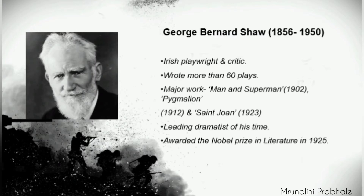Look at the first slide - introduction of George Bernard Shaw. The lifespan of George Bernard Shaw was 1856 to 1950, meaning he was born in 1856 and died in 1950. G.B. Shaw was an Irish playwright and critic. He wrote more than 60 plays during his lifetime, including major works such as Man and Superman, published in 1902.